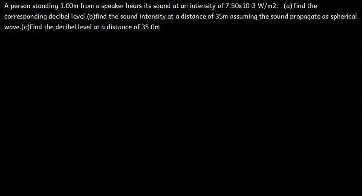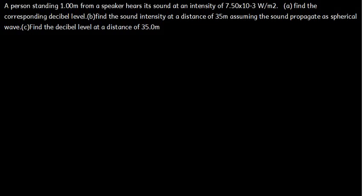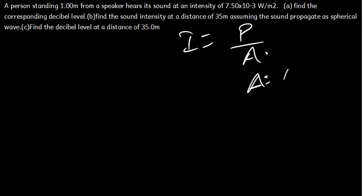What we need to understand is that intensity is given by the formula power divided by area — you can define intensity as the rate of power per unit area. When we are talking about a spherical wave, the area is given by 4πR², where R is the radius.